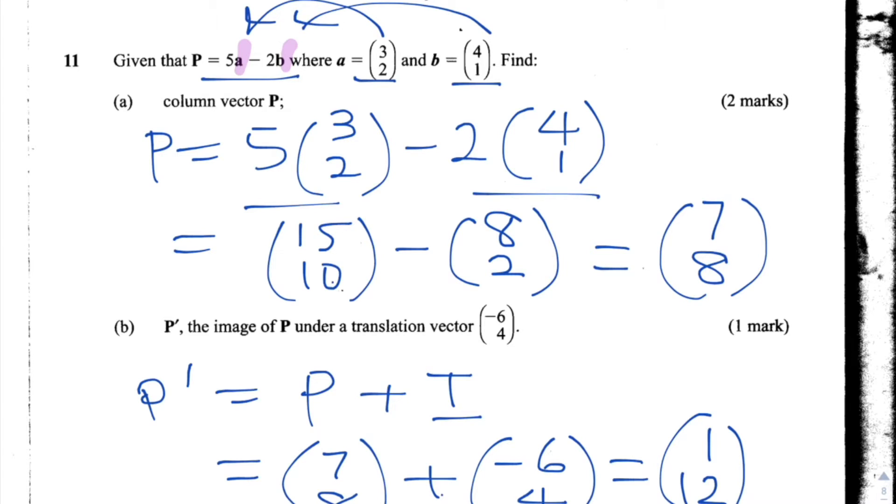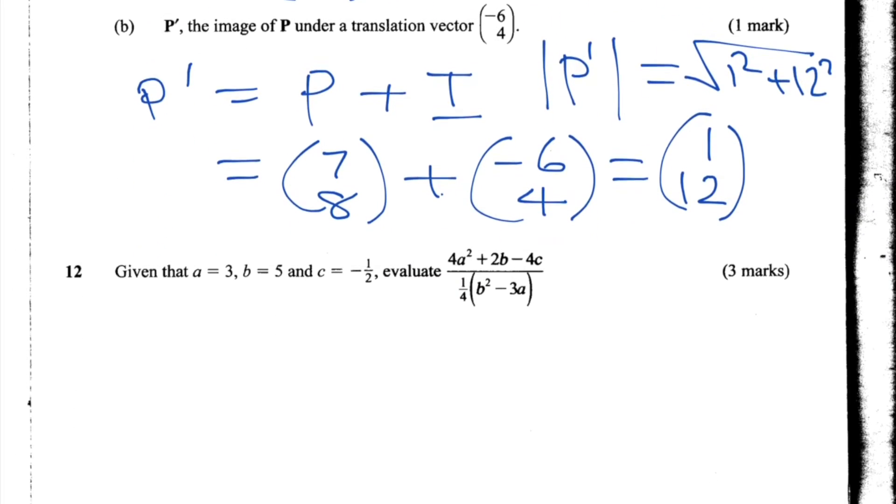And we might get a question where they ask us to find the magnitude of a vector. In that case, we would just use Pythagoras. And the magnitude written with these vertical lines of P dash is square root of 1 squared plus 12 squared.